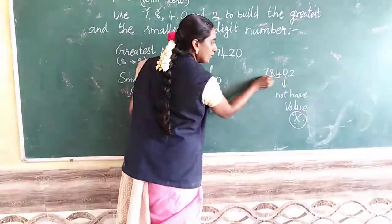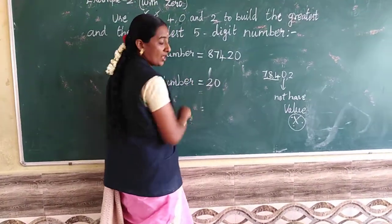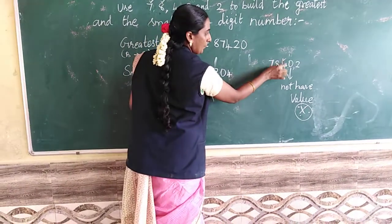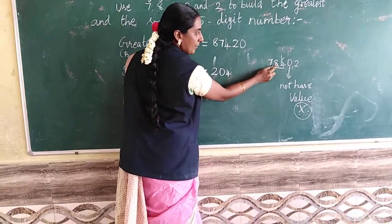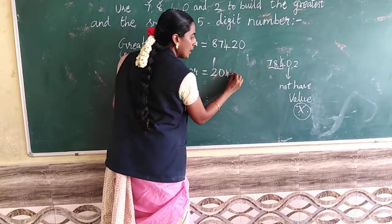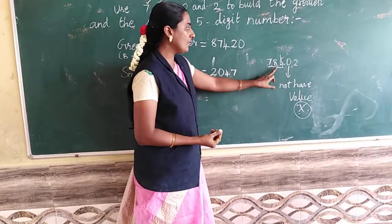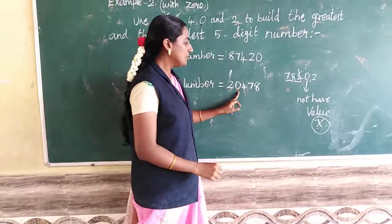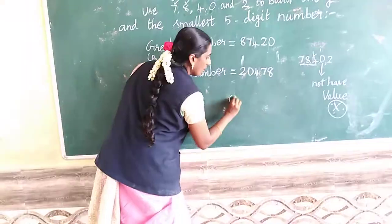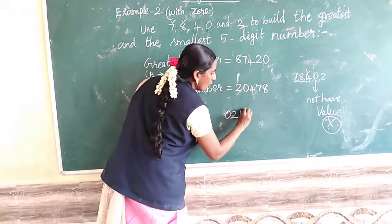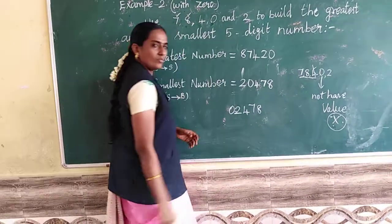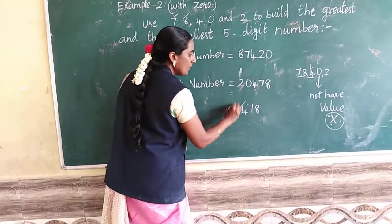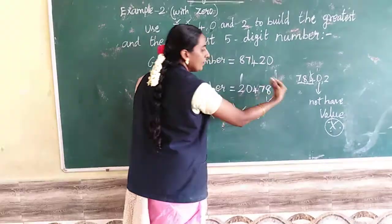So the smallest number is 20478. Listen carefully — 0 is placed second, not first. Don't write it as 02478 because we cannot read that — it is wrong. 20478 is the only correct answer.